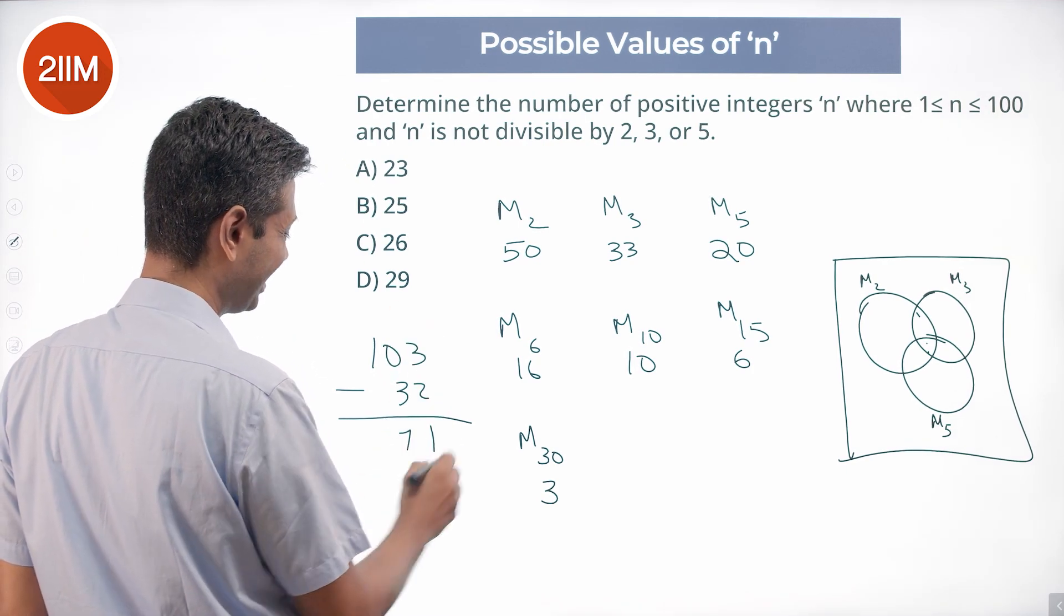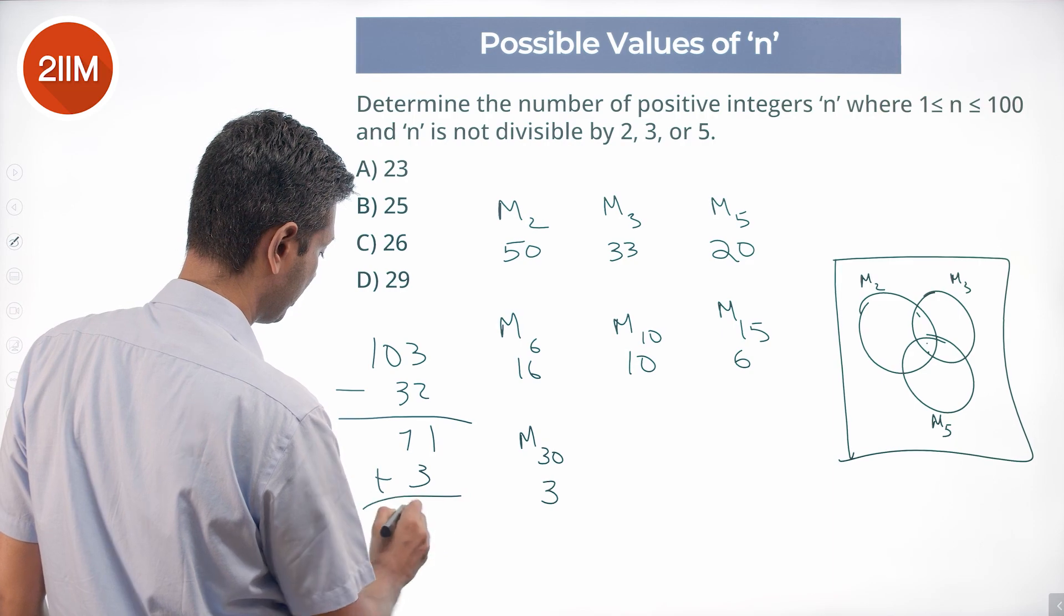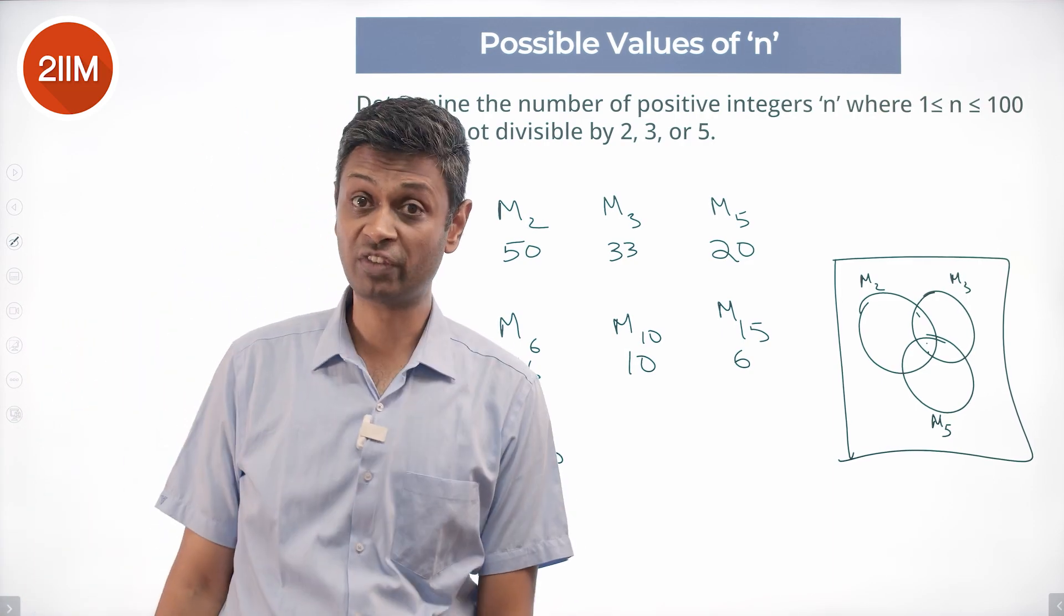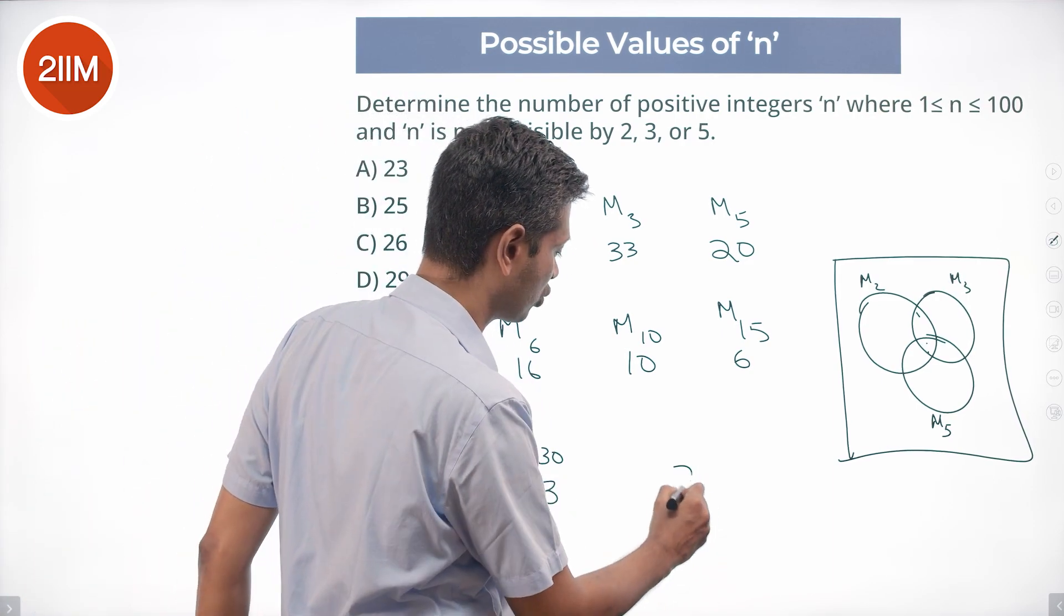Add these three: 50 plus 20 is 70 plus 33 is 103, minus the sum of these three which is 35, minus 3 is 32, gives 71. 71 plus 3 is 74. A union B union C is 74. That means outside of that is 26.